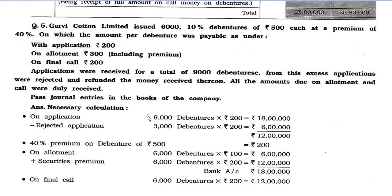Now, Question No. 5. Garbi Cotton Limited issued 600 10% debentures of Rs. 500 each at a premium of 40%, on which the amount per debenture was payable as: with application Rs. 200, on allotment Rs. 300 including premium, on final call Rs. 200. Applications were received for 9,000 debentures; excess applications were rejected and money refunded. All amounts due on allotment and call were duly received.